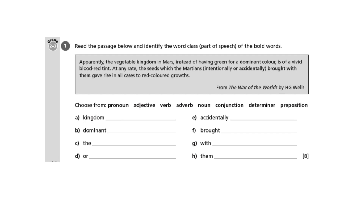Now let's look at the list of words that we have to identify. First, we've got 'a kingdom'. A kingdom is a thing — it's an abstract thing, but nonetheless a thing — so that makes it a noun. Next, 'dominant': the phrase is 'a dominant color', and color is a noun, so 'dominant' describes it. In that case it's an adjective.